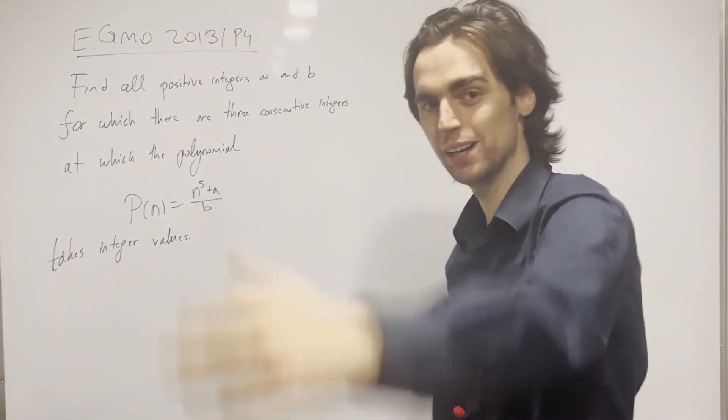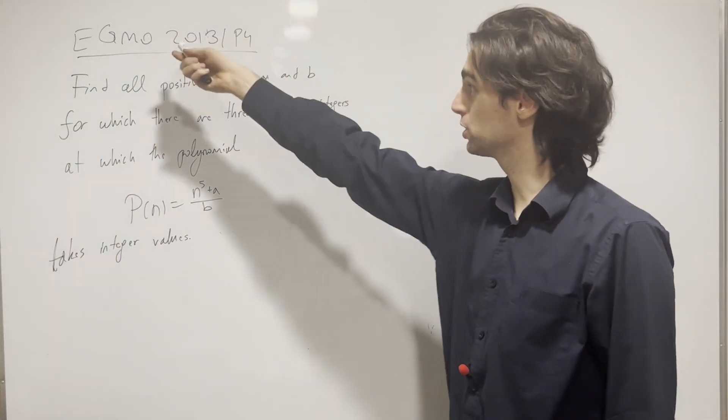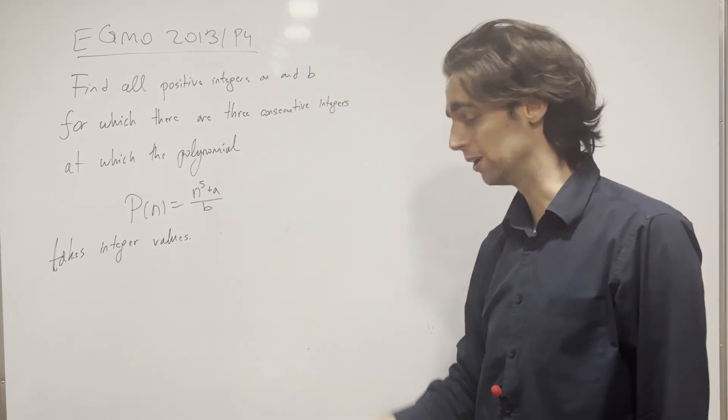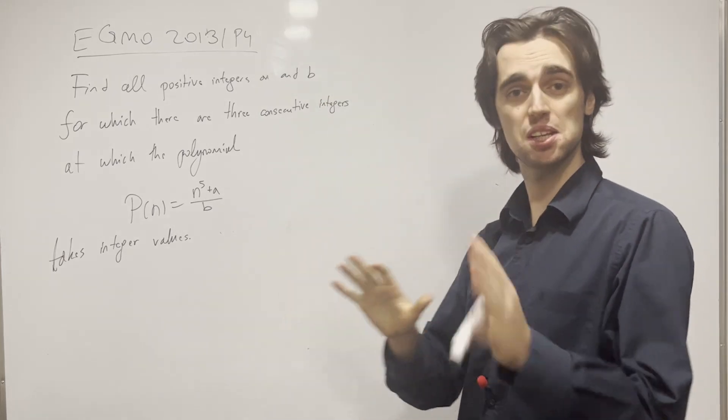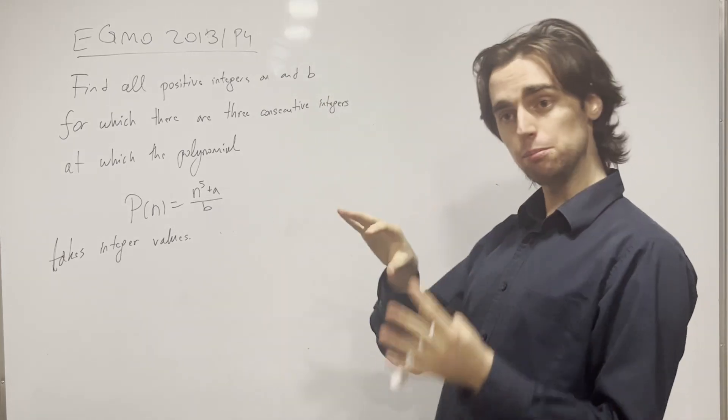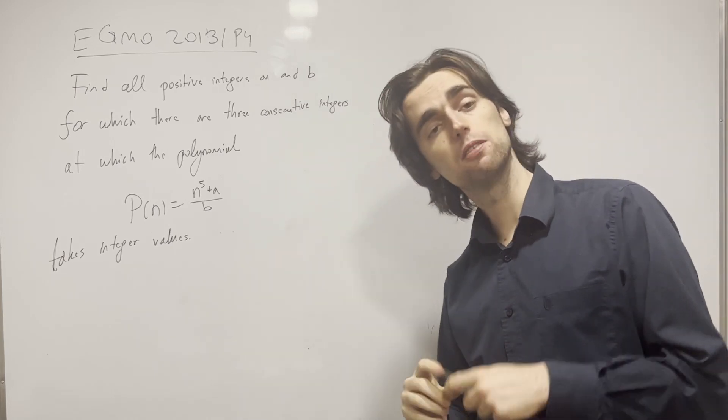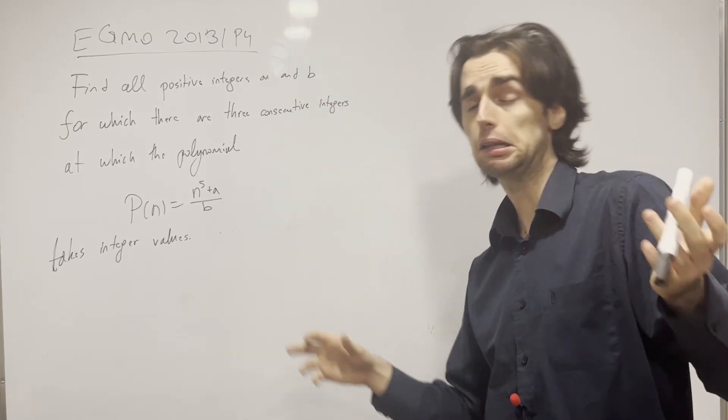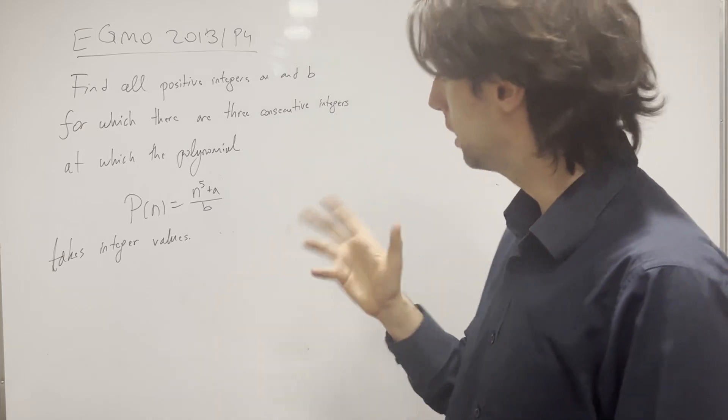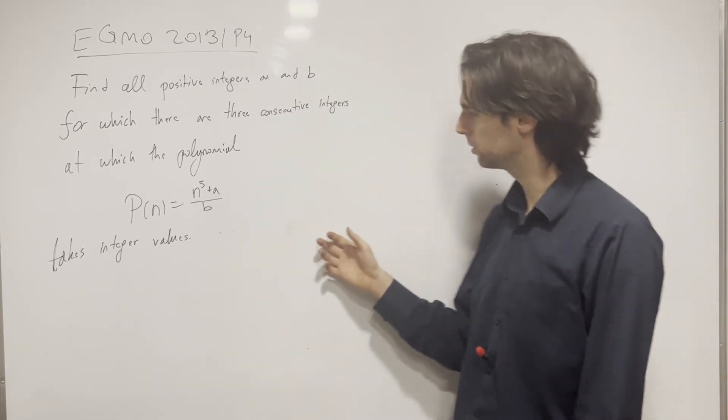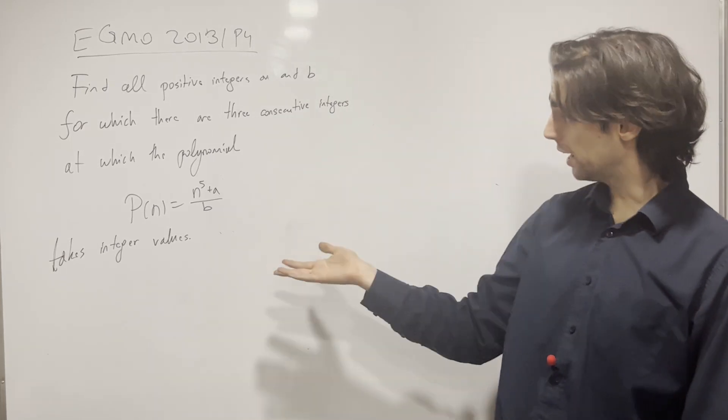Hello fellow problem solvers. Today I'm going to be doing a problem from the European Girls Math Olympiad 2013, problem number 4. This is a very cool number theory problem, easy to medium, which I suggest you try out for a minimum of 20 minutes, ideally 45 to an hour, not more than 2 hours. If you'd like to go along with us, give us a go for the next 10 minutes.